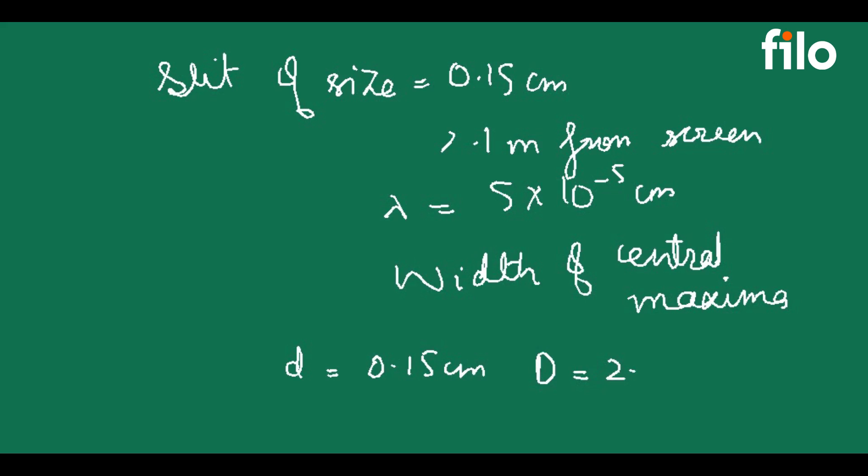Distance is 2.1 meter and lambda is 5 × 10 to the power minus 5 cm. This is clear. Then we know that width of central maxima is 2 lambda D by d. So putting values: 2 into 5 into 10